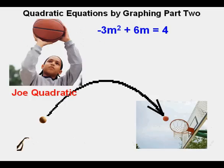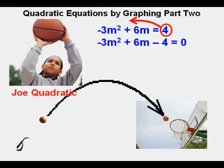Joe will now look at this one, negative 3m squared plus 6m equals 4. He rearranges the equation to get zero by itself by moving out the 4 on the right side of the equation over to the left side. It becomes minus 4 on the left side and zero is left on the right side. He changes the zero to y and the m's to x's and flips around the equation. He has y equals negative 3x squared plus 6x minus 4.